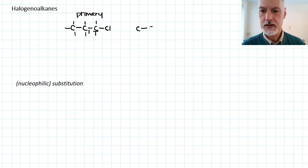If I take that chlorine now or halogen and put it in the middle of my chain, and again I'll use quick skeletal structures here, that carbon is attached to two others. So this would be an example of a secondary halogenoalkane.